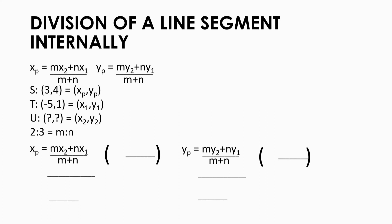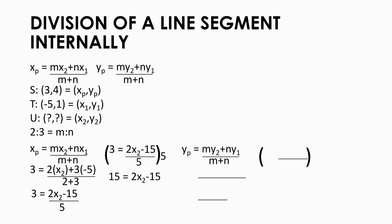Let's find the x-coordinate of the missing point. x sub p equals m times x sub 2 plus n times x sub 1, all over m plus n. Substitute: x sub p is 3, m is 2, x sub 2 is still unknown, n is 3, x sub 1 is negative 5, and m plus n is 2 plus 3. Simplify to get 3 equals 2 times x sub 2 minus 15, all over 5. Multiply both sides by 5 to get 15 equals 2 times x sub 2 minus 15. Add 15 to both sides to get 30 equals 2 times x sub 2. Divide both sides by 2, and x sub 2 equals 15.